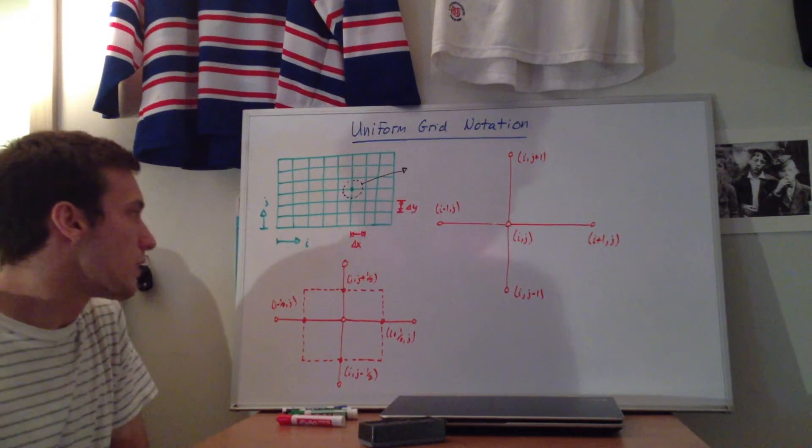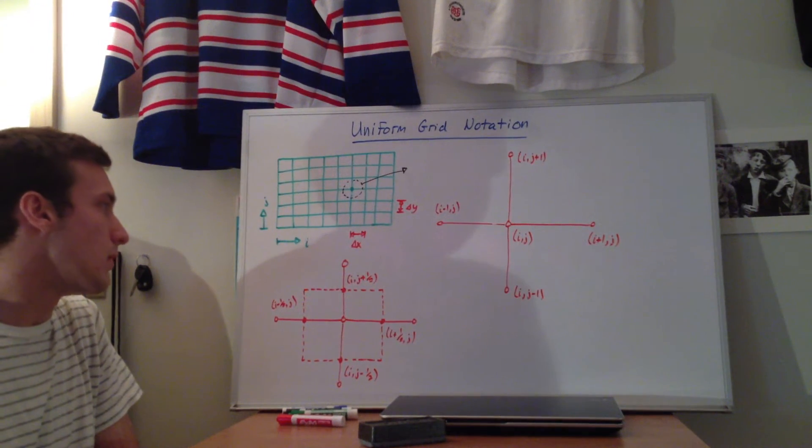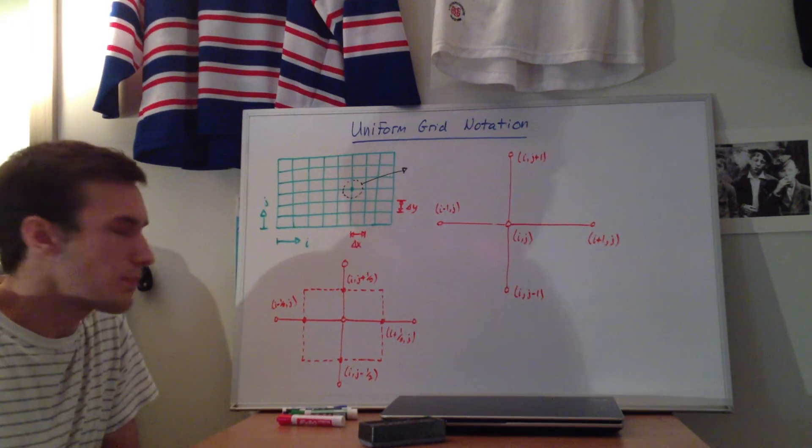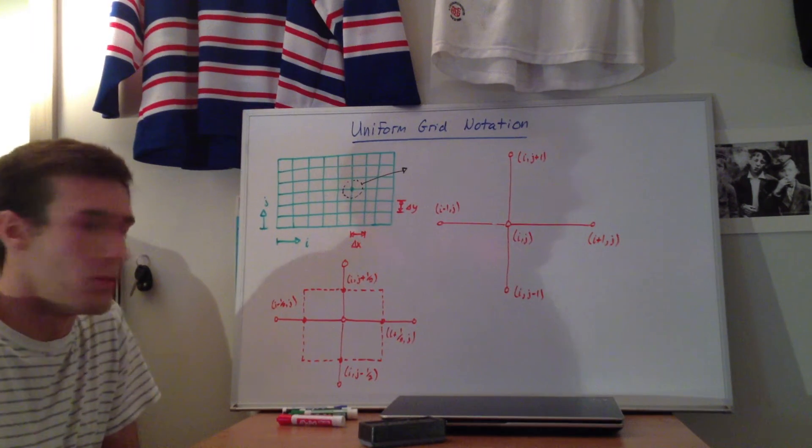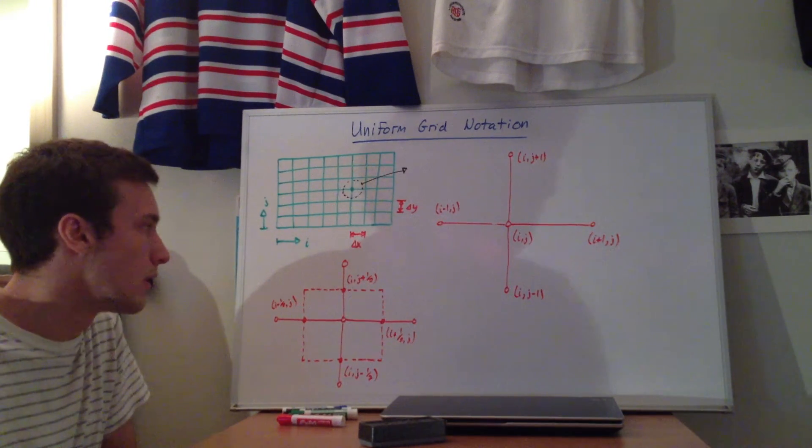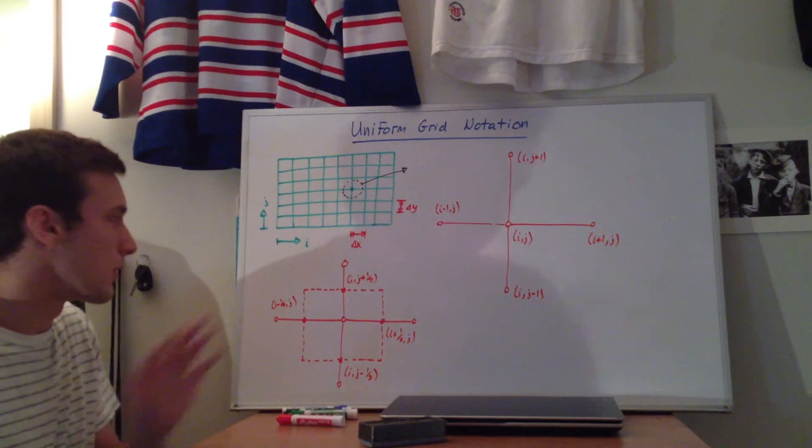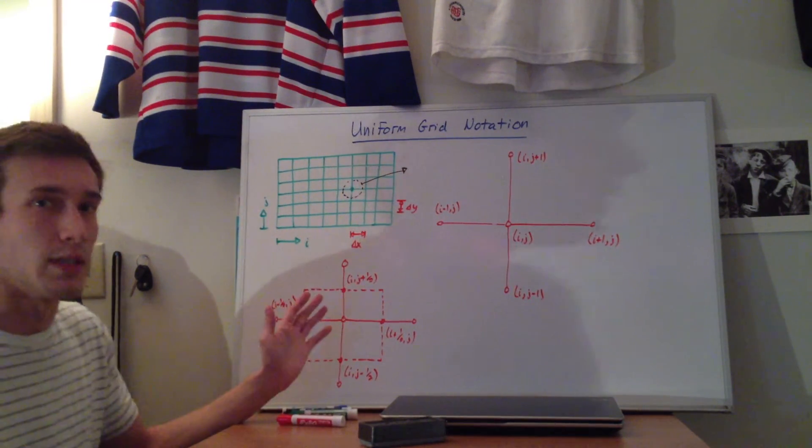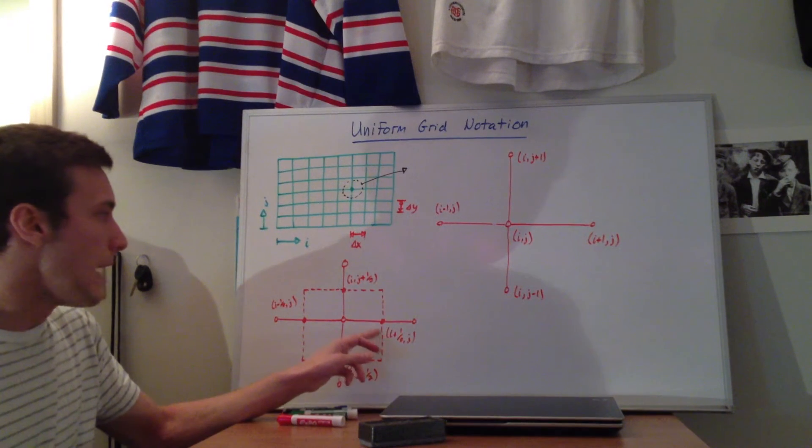When we get to some of the schemes and finite differences, and a lot of the times in finite volume, you have to work with half nodes. And I'll explain those as we go with the different methods, but it's hard to explain it here. But you want to evaluate some things at the half nodes. So at the half nodes, it'll be called, in this case.